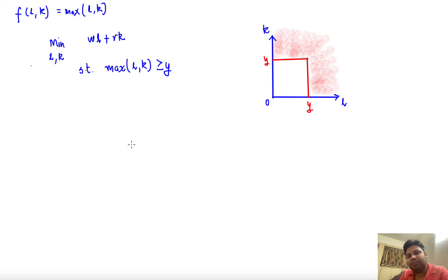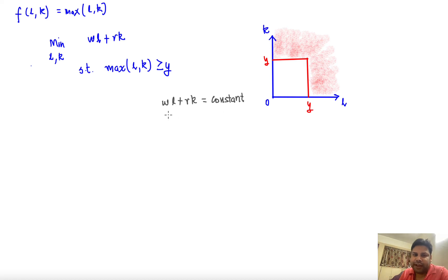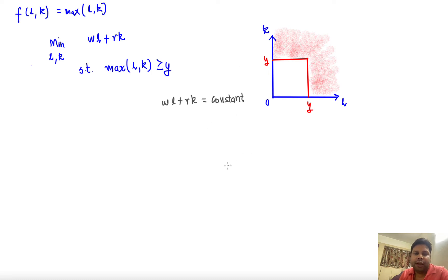Now we can draw some isocost curves. Isocost curves are labor-capital combinations that cost the same. An example of an isocost curve is wl + rk = some constant. If you change this constant the isocost curve shifts, and the slope of the isocost curve is -w/r, or w/r in absolute value.